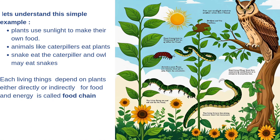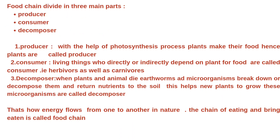Let's understand this with a simple example. Plants use sunlight to make their own food. Animals like caterpillars eat plants, snakes eat the caterpillar, and owls may eat snakes. Each living thing depends on plants either directly or indirectly for food and energy — this is called a food chain.